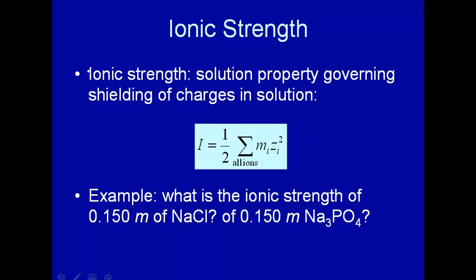With that idea we introduce a concept called ionic strength, given the symbol I. Ionic strength qualitatively is a property of the solution which governs the shielding of charges in solution. For example, if you have a positive charge corresponding to a sodium ion, a test particle nearby will feel that positive charge. However, if you put other ions in between the charge and the test charge, the more charges you put in, the less the positive charge is felt out there. So ionic strength is a form of shielding of charges.